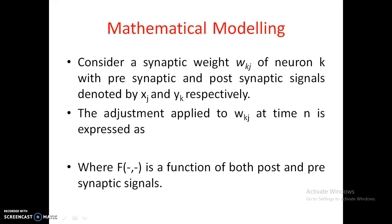Now we need to see the mathematical modeling. Let us consider a synaptic weight W_KJ, which is the synapse from the Jth neuron to the Kth neuron, with presynaptic and postsynaptic signals denoted by X_J and Y_K respectively. X_J is the input or presynaptic signal and Y_K is the postsynaptic signal. The adjustment applied to W_KJ at time n is expressed as: ΔW_KJ = F(Y_K(n), X_J(n)), where F is a function of both post- and presynaptic signals.